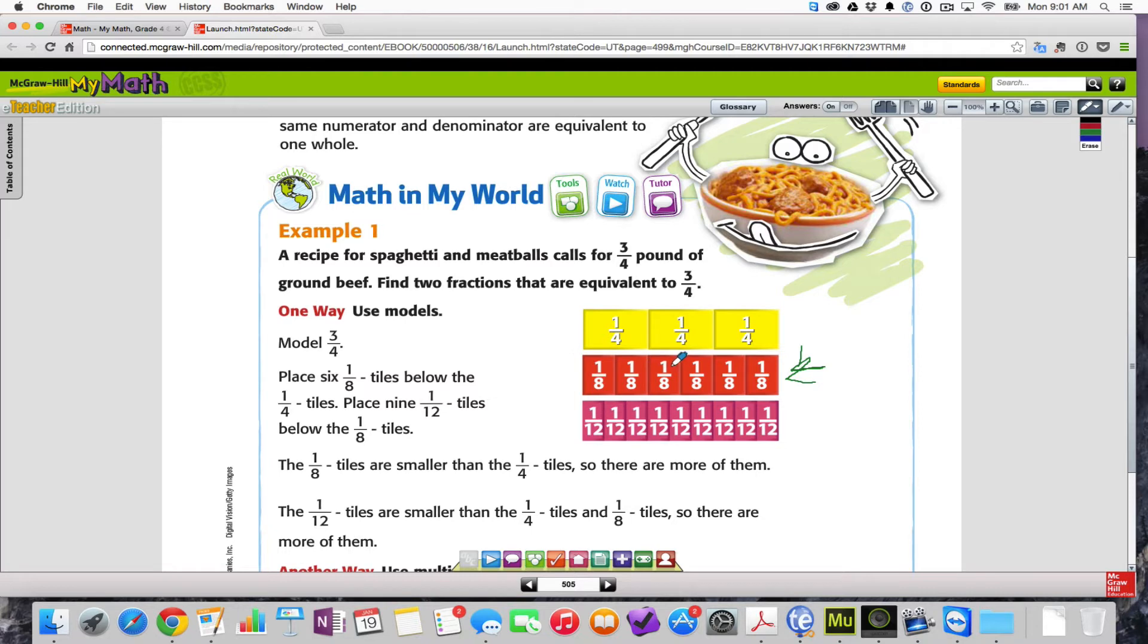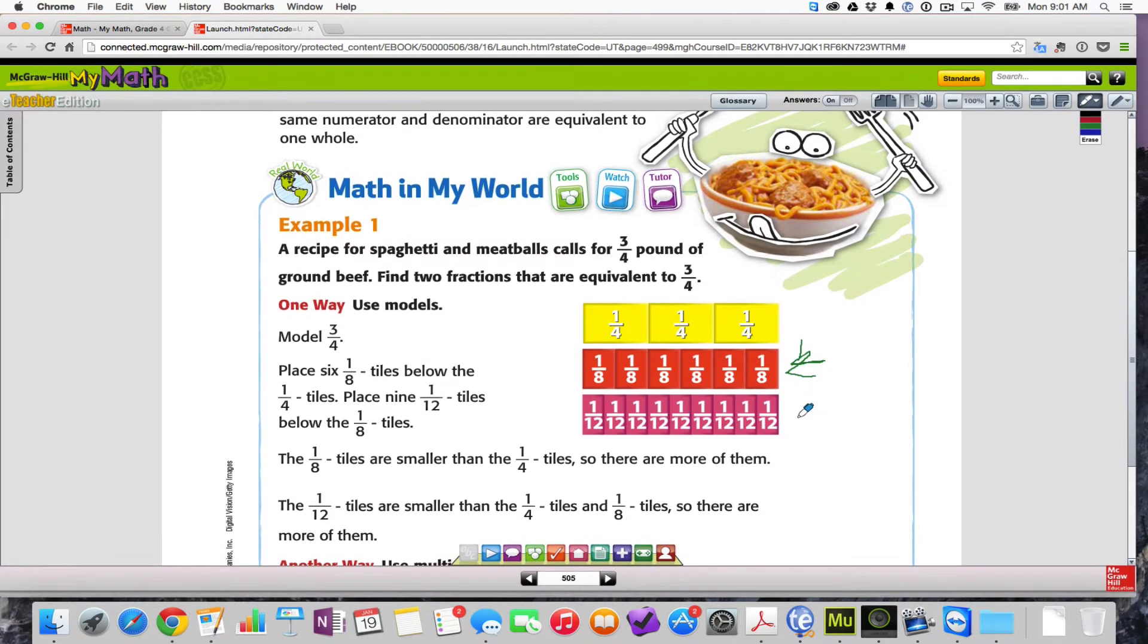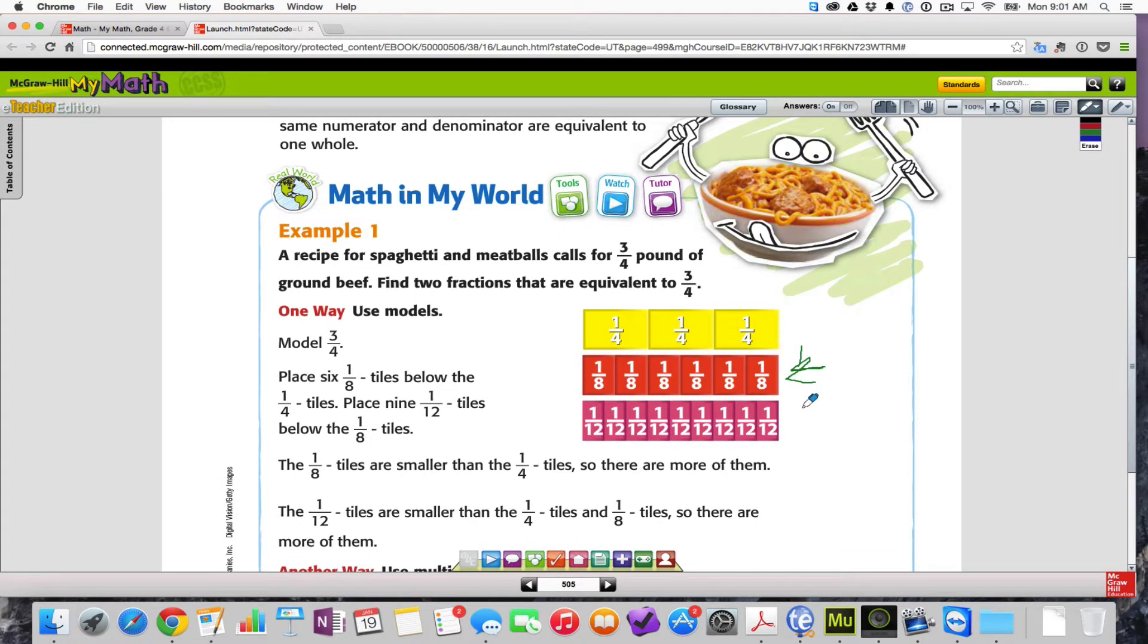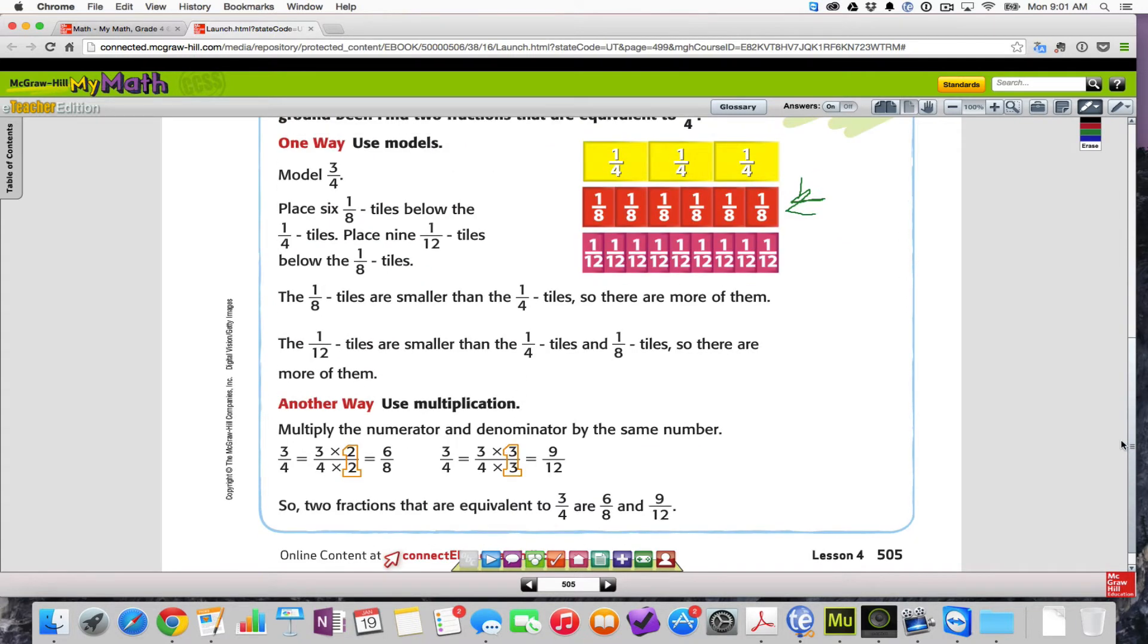And so, we have our one-eighths. There's one, two, three, four, five, six. Six-eighths means the same as three-fourths. And then they also have the one-twelfth tiles. The one-eighth tiles are smaller than the one-fourth tiles, so there's more of them. And the one-twelfth tiles are also smaller than the one-eighth tiles, so there's more of them.